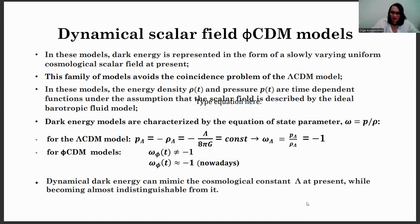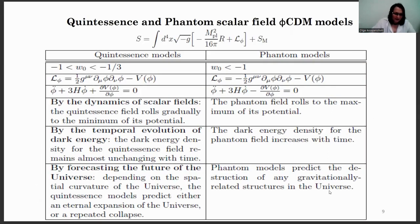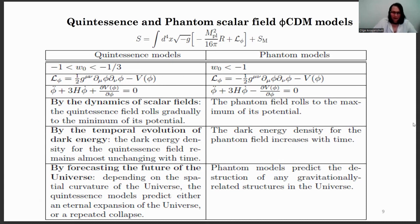Dynamical dark energy can mimic the cosmological constant lambda at present while becoming almost indistinguishable from it. The phi CDM models are divided into quintessence and phantom scalar field models. These two classes of models differ from each other by the range of the equation of state parameter values. By the sign of the kinetic term in the Lagrangian — it is positive for quintessence models and negative for phantom models. By the form of the Klein-Gordon scalar field equation of motion: the quintessence field rolls gradually to the minimum of its potential, while the phantom field rolls to the maximum of its potential.